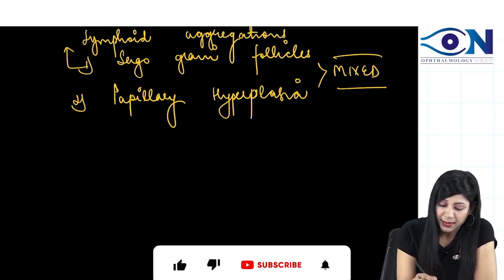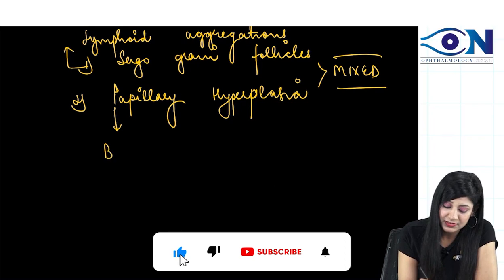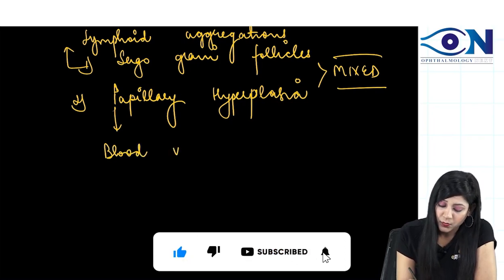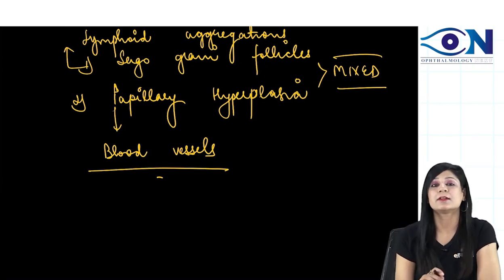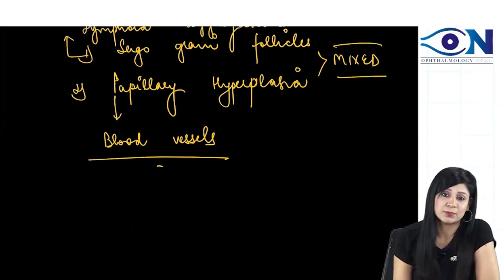While if I talk about papillary hyperplasia, this is your blood vessels. One is lymphoid aggregations, one is blood vessels, and if you are getting both then it is actually trachoma.